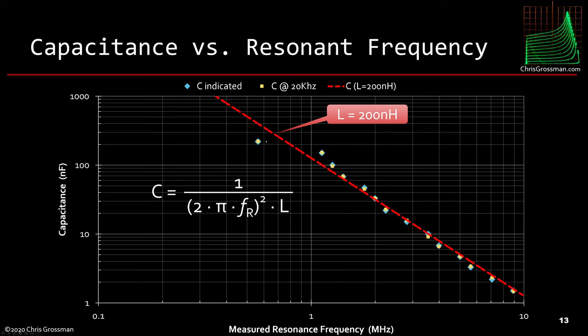If we take the capacitance and the resonant frequency for each capacitor, where the blue one is the indicated capacitance on the box and the yellow squares are the capacitance I measured at 20 kilohertz, and we plotted on a capacitance versus resonant frequency plot log-log, we get essentially what looks almost like a straight line. If we look at the capacitance resonant frequency formula and rewrite it so C is a function of resonant frequency and then pick an inductor of 200 nanohenries, we see we get a pretty good fit to the data.